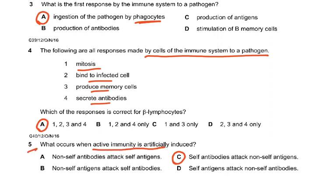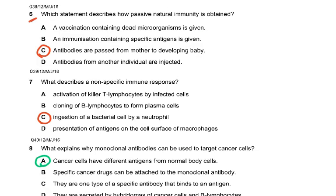Question five: what occurs when active immunity is artificially induced? If we give you artificially weakened polio virus, your lymphocytes will make antibodies, so self antibodies attack non-self antigens. Your lymphocytes will make antibodies thinking it is a live pathogen, and in doing so memory cells will develop. When the real pathogen enters, you'll already have memory cells which convert into plasma cells and produce antibodies to kill the pathogen. Question six asks which statement describes how passive natural immunity is obtained.